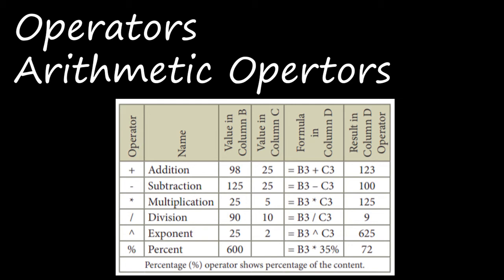Exponent means power - that is the exponent. The symbol is given in the operator column. B3 exponent C3 means the value 25 to the power 2, so the value is 625. Next is percentage - finding the percentage. Here 600 is the value. 35% of 600 means B3 into 35% and the value will be 210. These are the arithmetic operations.